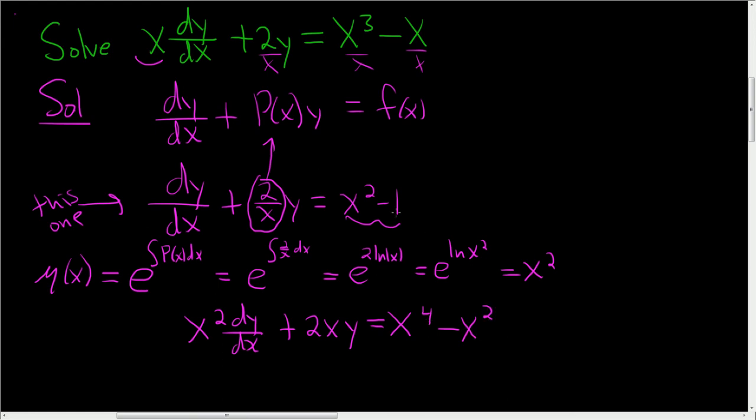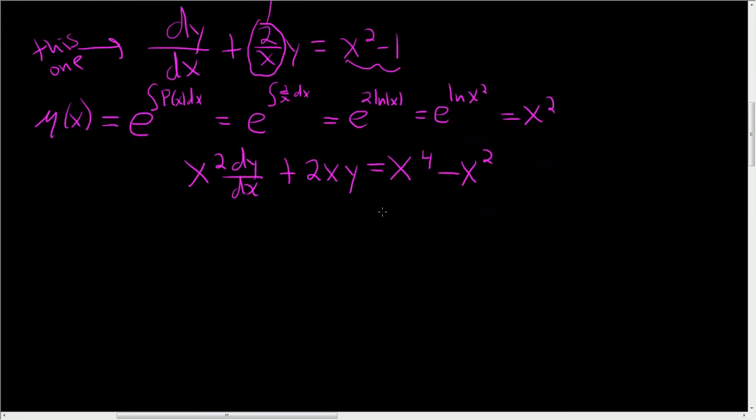The next step is the coolest part of this problem, because all of this is the derivative with respect to x of x squared times your unknown function y. And this is equal to x to the fourth minus x squared.